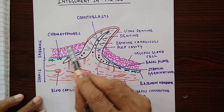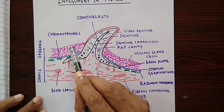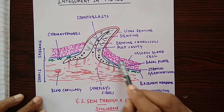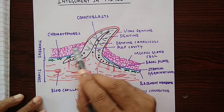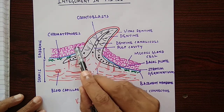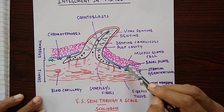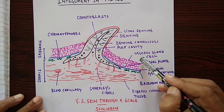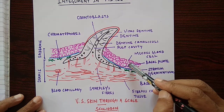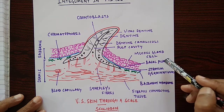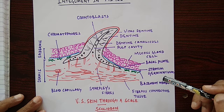These cells multiply and move towards the upper surface. As upper cells are removed, they occupy their place. In the outermost epidermis layer, unicellular mucus gland cells are present here and there.